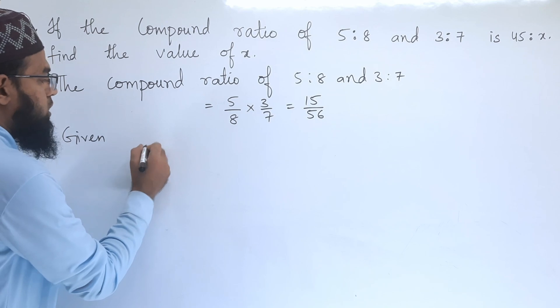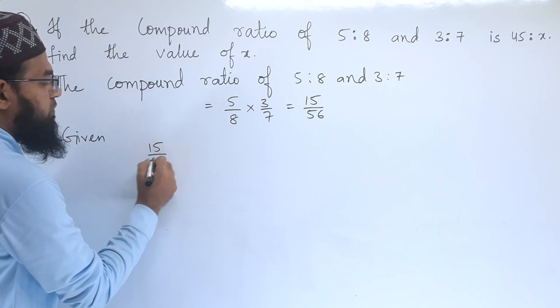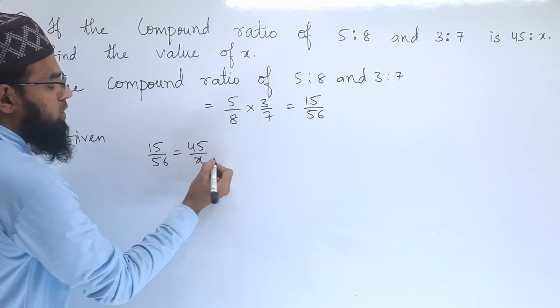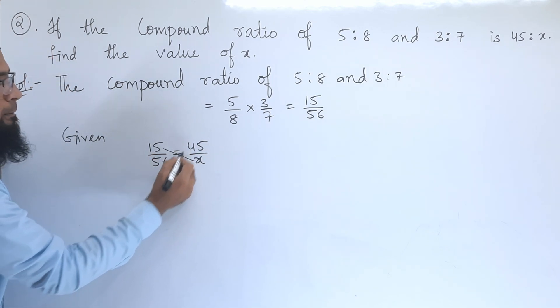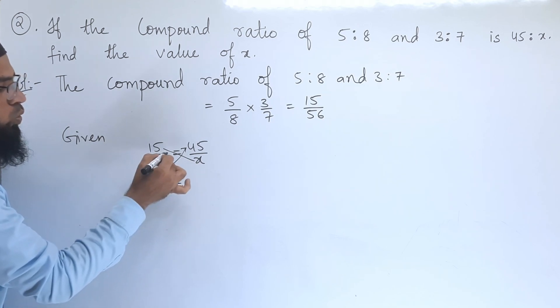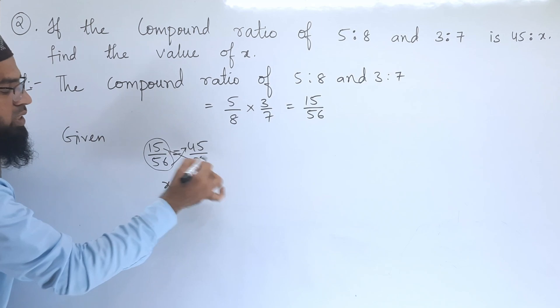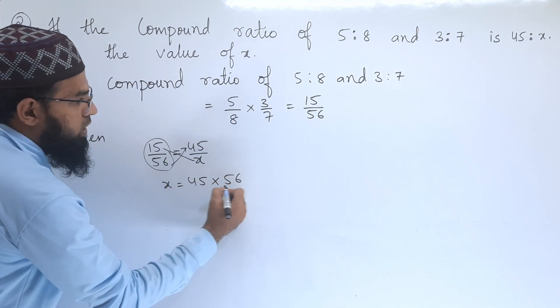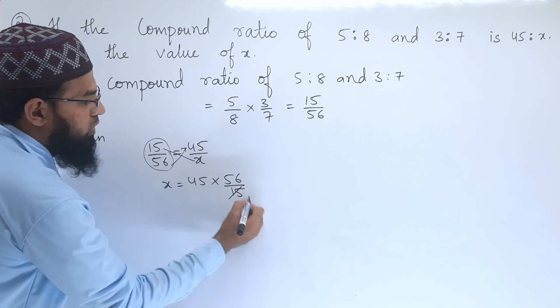We get x equals... sending this to that side, it becomes 45×56/15. 15 goes into 45 three times.